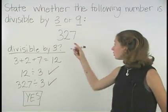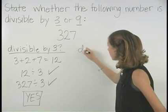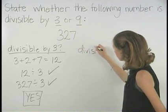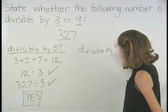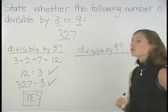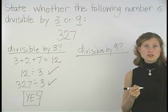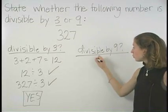Now let's determine if 327 is divisible by 9. Again, we need to find the sum of the digits, which we already know as 12.